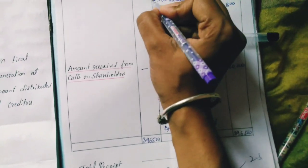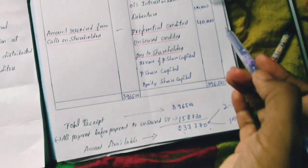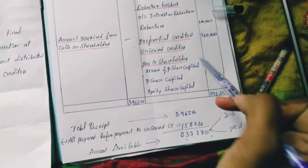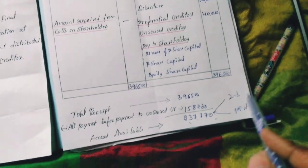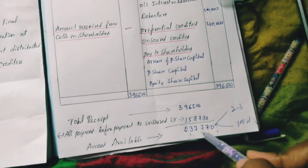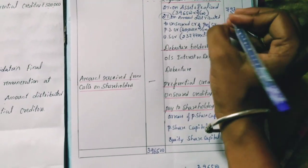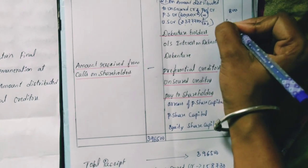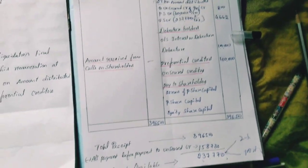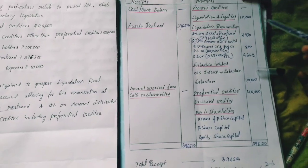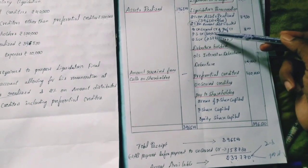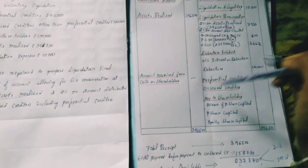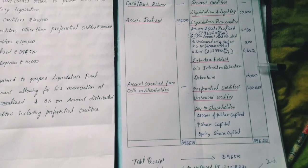The 2% remuneration is calculated: 2 divided by 102 of the available amount. Check if sufficient or not sufficient to pay unsecured creditors Rs.3,20,000 in full. It is not sufficient.